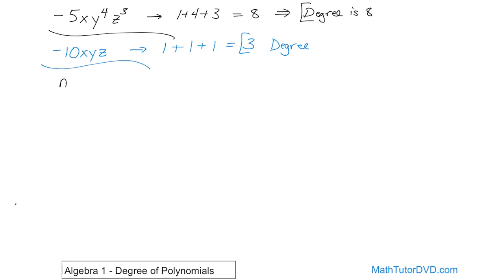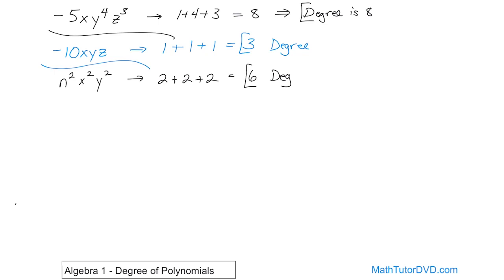Similarly, if you had n squared times x squared times y squared, to find the degree of this you just add up the exponents because it's just one term — these are all monomials so far. So 2 plus 2 plus 2 gives you 6, and that's the degree. It's a 6th-degree monomial.